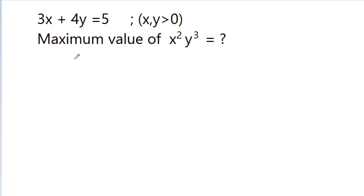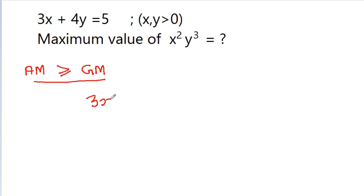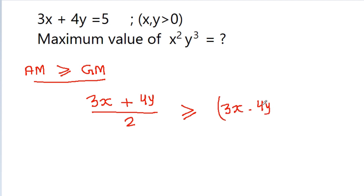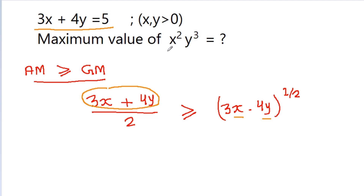In most cases when we need to find a maximum or minimum value, the AM-GM relation works. If we use AM-GM here, we get: (3x + 4y) / 2 should be greater than or equal to (3x · 4y) to the power 1/2. We know 3x + 4y equals 5, but here we get the value of x and y — and since we need x squared y cubed, this approach will not work directly.